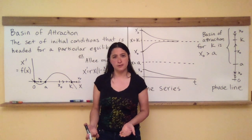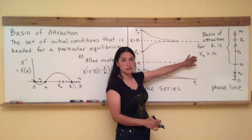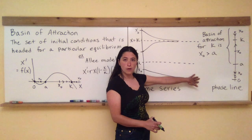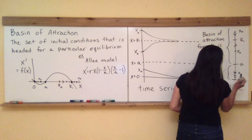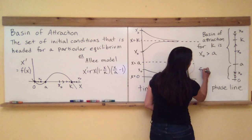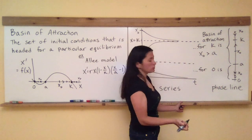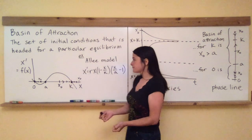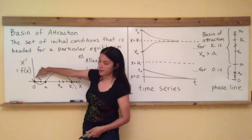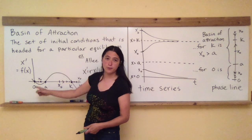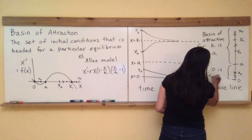So what's the basin of attraction for zero? Just as the basin of attraction for k is all initial conditions x-naught greater than a, the basin of attraction for zero is all initial conditions less than a. If we start anywhere in that region, the rate equation tells me to decrease and I'm headed for extinction. So the basin of attraction for zero is x-naught less than a.